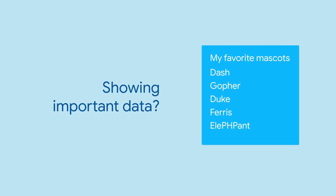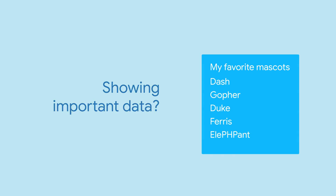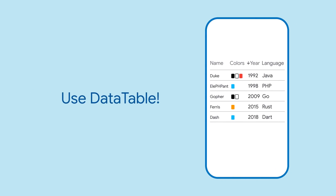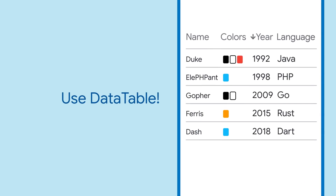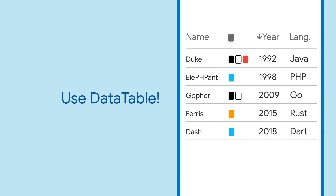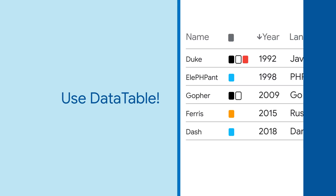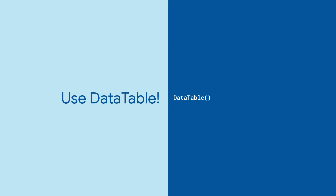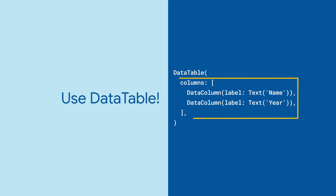Do you have some important data to show to your users? Use data table. The widget allows you to build a table that automatically sizes its columns according to what's in the cells. First, add the data table widget and define its columns.